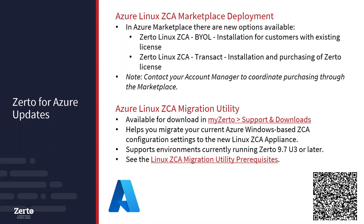Following the trend of mirroring VMware on-premises capabilities into the cloud, we've also brought a Linux migration utility into the cloud to help migrate Windows-based cloud appliances to the new Linux cloud appliance. Make sure to review the prerequisites beforehand — there's a QR code on screen now linking directly to the migration prerequisites for Azure. There are some architecture changes, so know what you need to do before attempting migration.